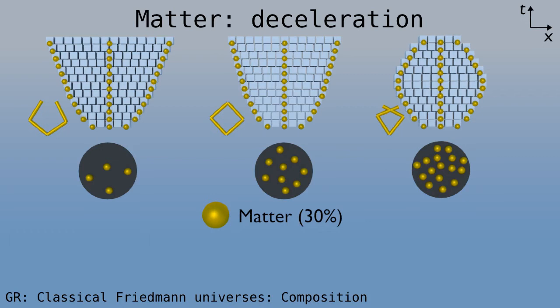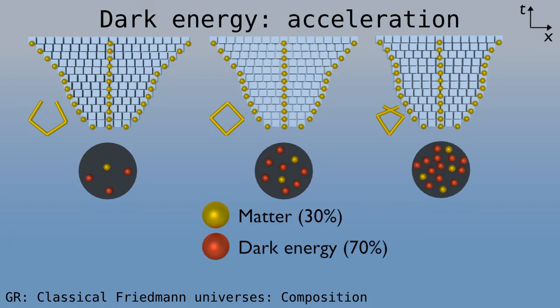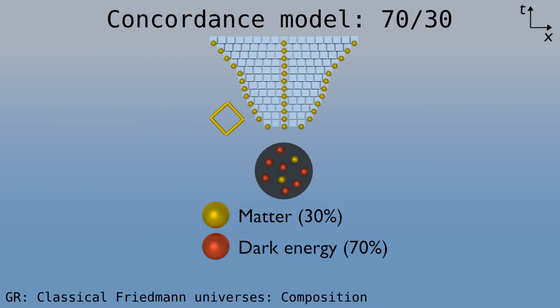But these days, we believe that about 70% of the contents is not regular matter, but dark energy. How does this affect the Friedman universes? Well, if we keep the total density the same, but change the composition, this is what we get. At later times, the deceleration changes into acceleration. This seems to have happened in our universe when it was about 5 billion years old. Let's focus on this version of the universe, which is called the concordance model.